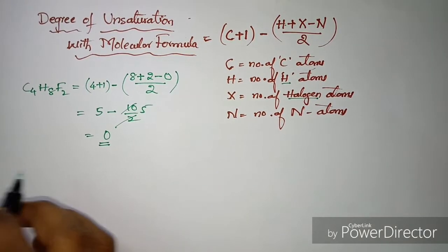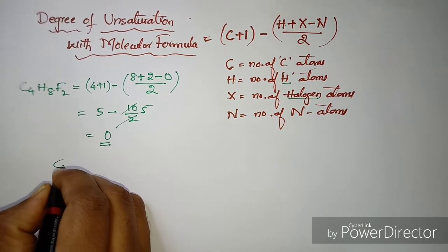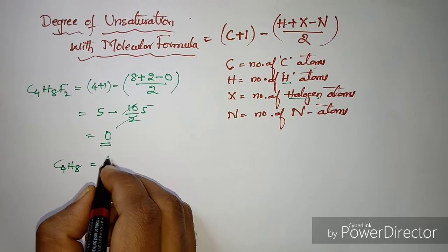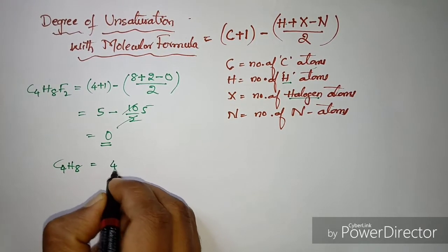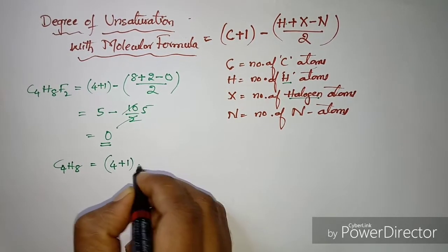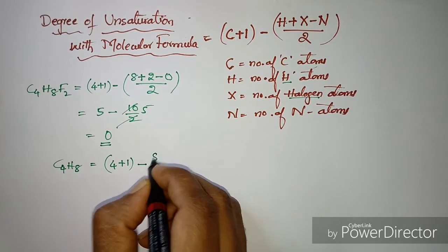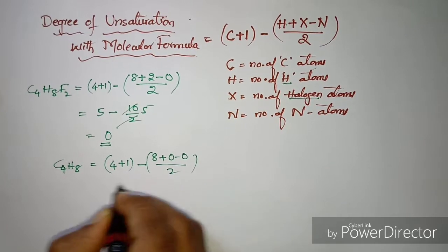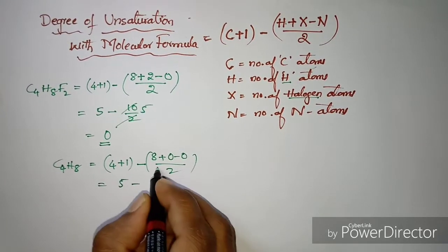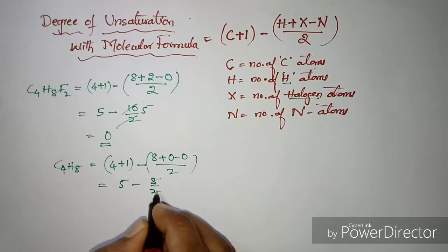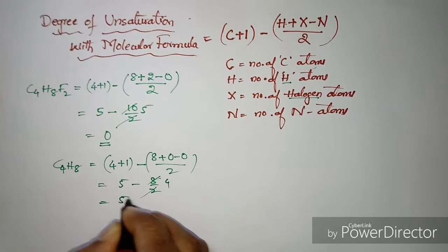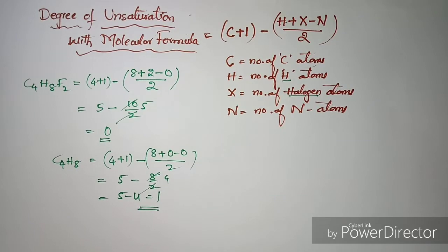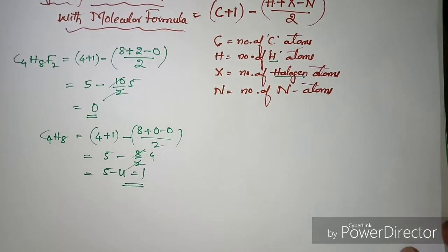Now let's check with another example: C4H8. Total number of carbons are four, so four plus one. Minus eight hydrogens. There are no halogens and no nitrogens. All divided by two. That equals (5 − 8) / 2... five minus four equals one. So you can apply this for any other molecular formula.